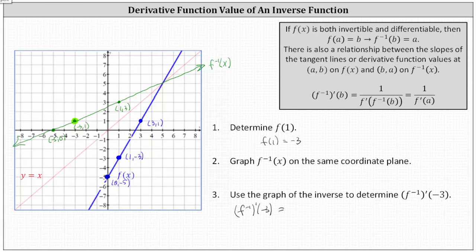If we sketch a tangent line to the line at this point, it's going to give us the same line. And notice the slope of this line would be one half, because if we go up one and right two, we find another point on the tangent line, as well as on f inverse of x.